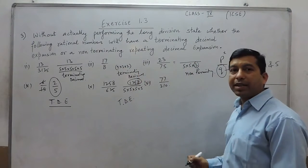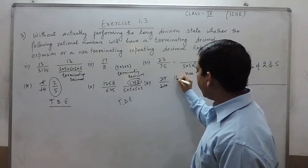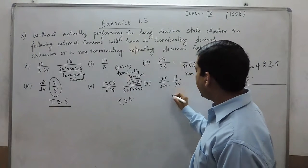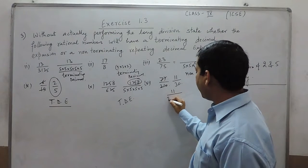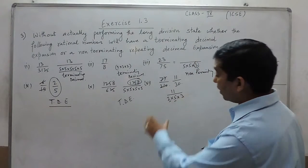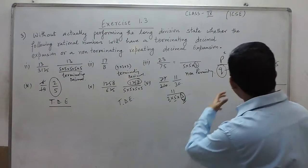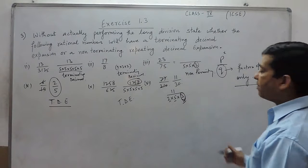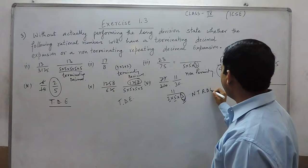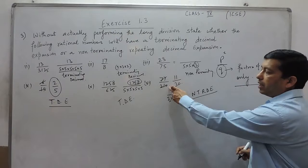When we talk about 77 upon 210, this can be cancelled by 7 first of all. It can be written as 11 upon 30. The numerator is 11, while the denominator 30 has factors 2 × 5 × 3. They have 2 and 5, but besides 2 and 5, there is one more factor which is 3. We already know that if there is any factor except 2 and 5 in the denominator, this will be a non-terminating repeating decimal expansion.